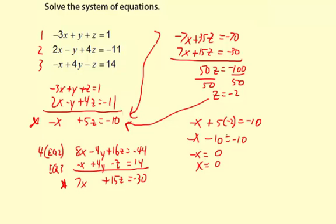We have x and z now, we need to find y. I'll back substitute into one of the three original equations, using equation 1. Negative 3 times 0 plus y plus negative 2 equals 1. Simplifying, y minus 2 equals 1, so y equals 3.